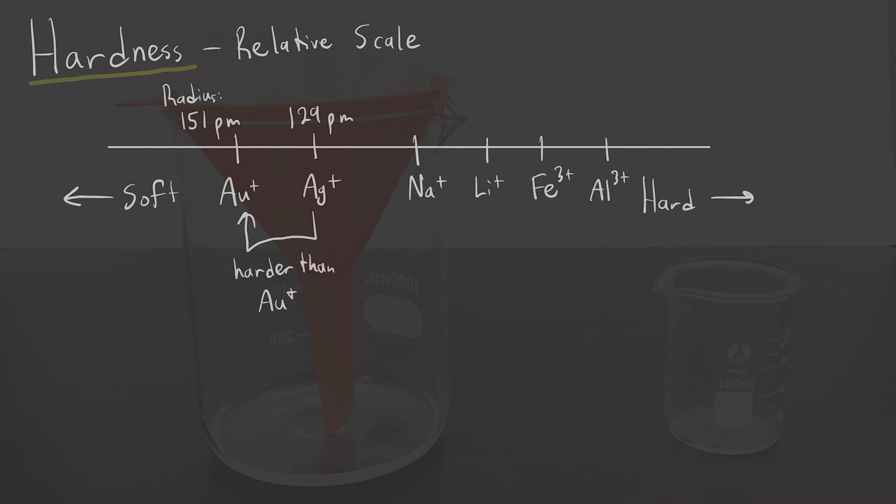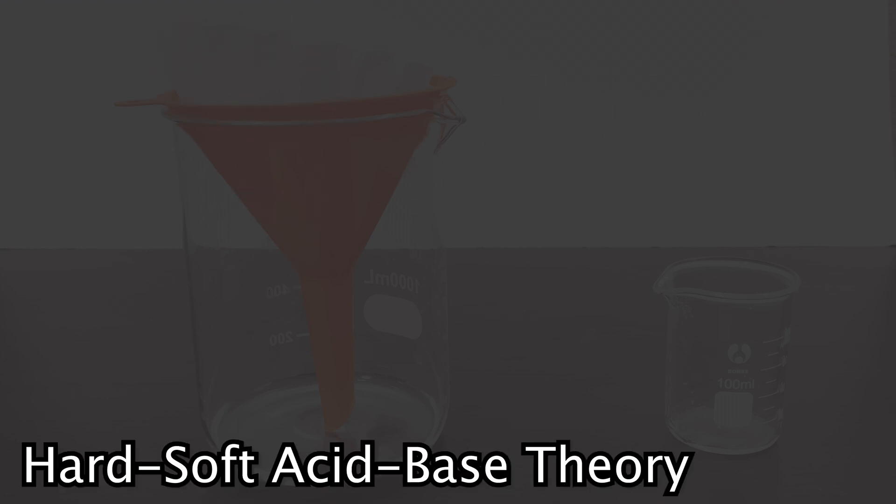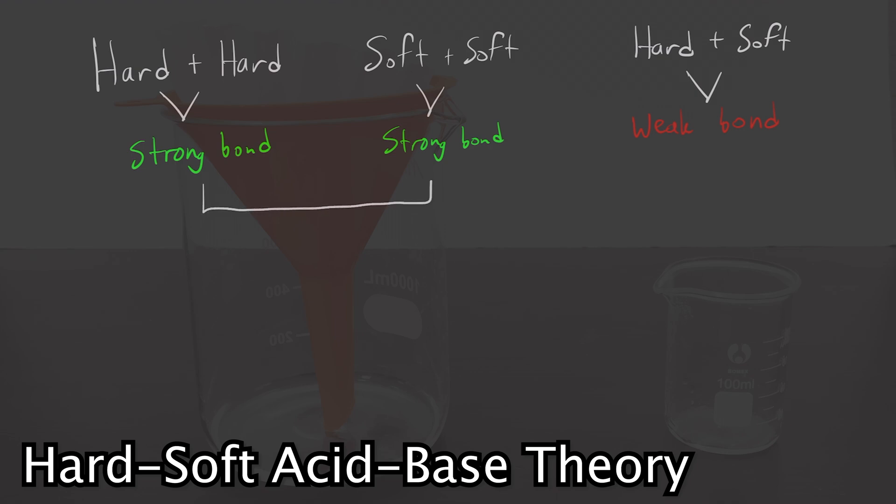Now back to the crux of our theory. Hard soft acid base theory is based entirely, no pun intended, around one important idea. Hard acids and hard bases bond strongly, while soft acids and soft bases also bond strongly. Hard soft combinations are much weaker. In terms of solubility, this means that hard hard and soft soft combinations of ions will often give precipitates, while hard soft ion combinations will give soluble compounds.